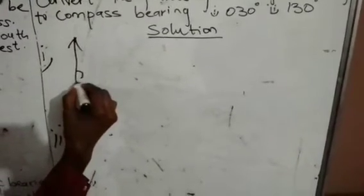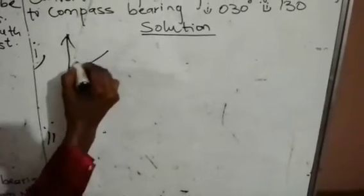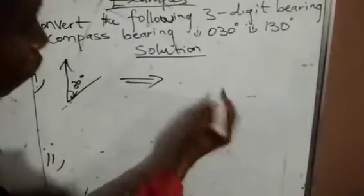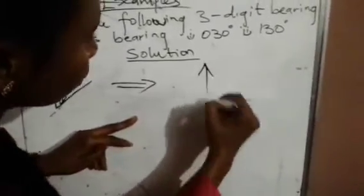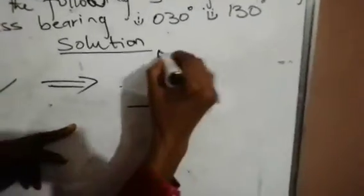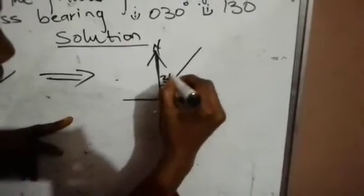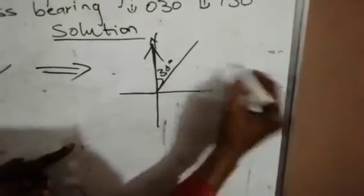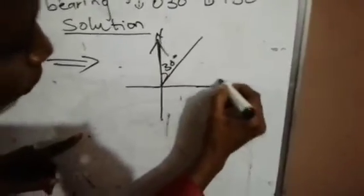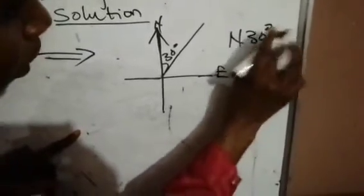We have 30 degrees. So we are here — this should be our 30 degrees. Then converting it to compass bearing, we will have something like this. From here to here it should be 30 degrees. So here should be our east. We have 30 degrees north east — N30°E.